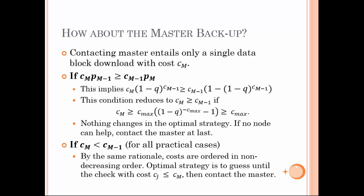Contacting the master entails only a single data block or symbol download with cost C_M. Using our necessary condition — if C_M * p_{M-1} ≥ C_{M-1} * p_M — then the optimal strategy would contact the master at the end of trying each one of the neighboring devices. This condition implies C_M ≥ C_{M-1} if the following condition holds. In this particular case, shuffling costs in non-decreasing order leads to an optimal strategy — in other words, if no close-by nodes can help, we contact the master at the end of this process. If this condition fails to hold, then C_M < C_{M-1}, and by the same rationale costs are ordered in non-decreasing order. An optimal strategy would be to guess until the check node with cost ĉ_J ≤ C_M, then finally contact the master. Therefore, not all neighboring nodes would be visited in this case.